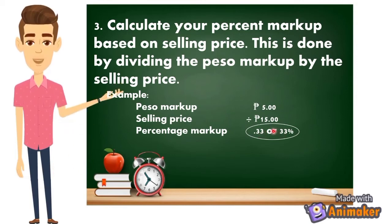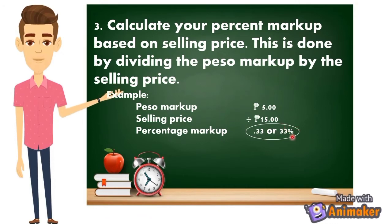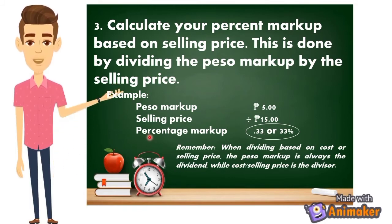To convert this decimal, move the decimal point two places to the right — one, two — so the answer converts to 33 percent. You can also multiply 0.33 by 100 to get 33 percent. Remember: when dividing based on cost or selling price, the peso markup is always the dividend, while the cost or the selling price is the divisor.